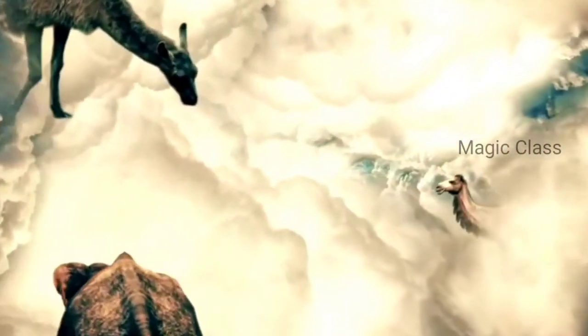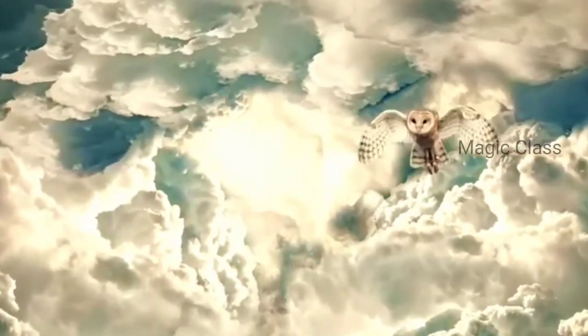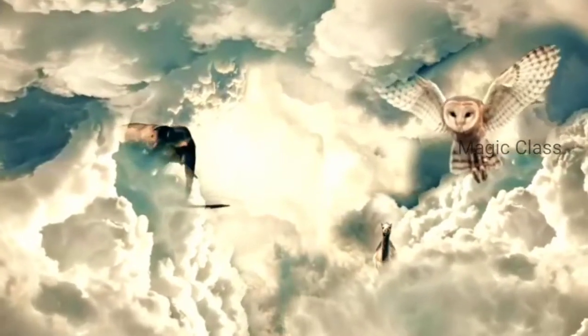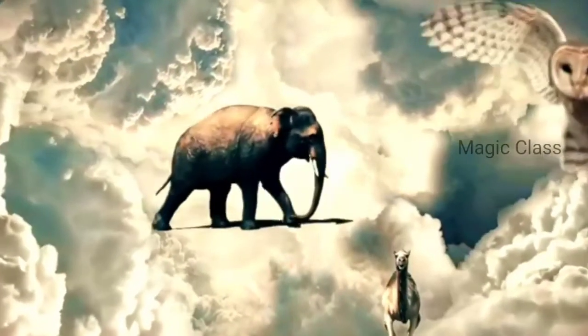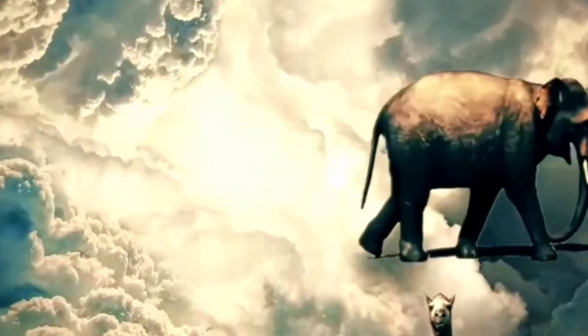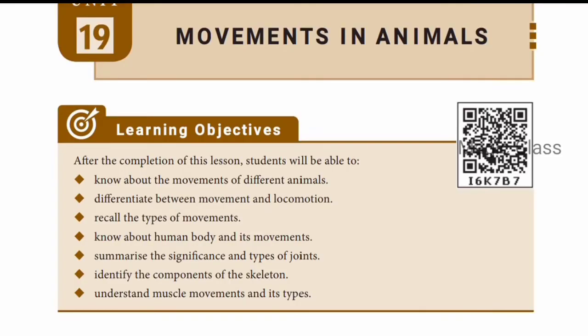Movement refers to the act of moving body parts, such as using the legs. These are all termed under the word movement. When you use this movement to move from one place to another, it is called locomotion. Animals go from one place to another in search of food, shelter, and water — that is all locomotion.